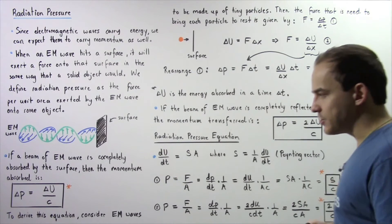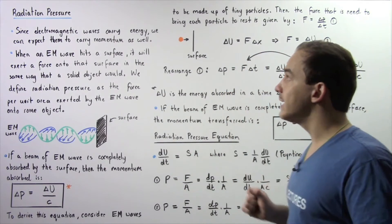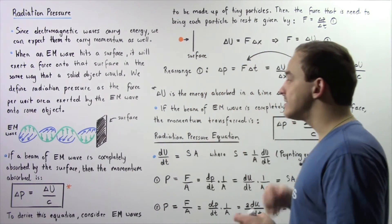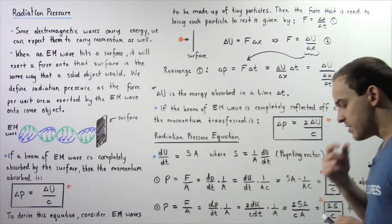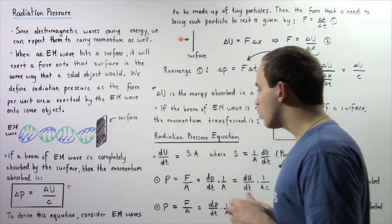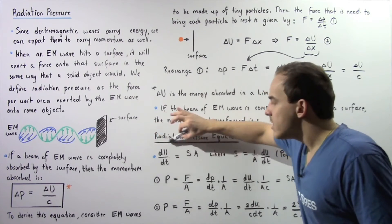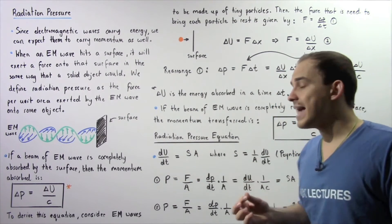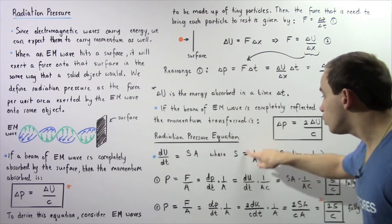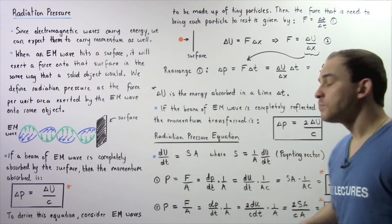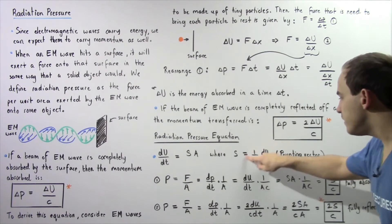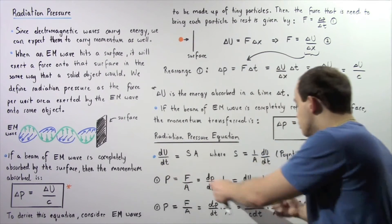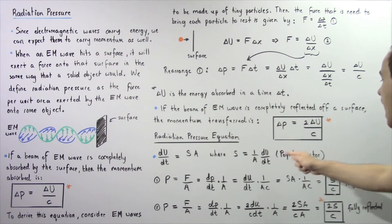Using these two equations, we are now ready to define the equation for radiation pressure — the pressure caused by electromagnetic radiation that hits the surface of an object. Recall from our discussion on the Poynting vector, we were able to show that du/dt, the rate of change of energy per time, is equal to the product of S and A, where S is known as our Poynting vector. So S equals 1 divided by A multiplied by du divided by dt, and if we multiply S by A, the A's cancel and we are simply left with du divided by dt.